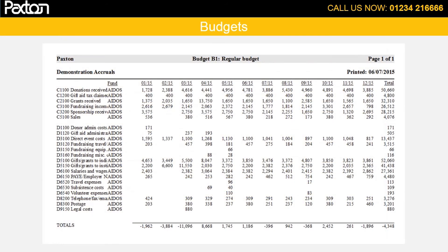A budget detail report can be produced showing the budget figures set for each fund. This is in effect the forecast for the fund and can be used to good effect when seeking grants from funding organisations. The bottom line on the report shows the monthly surplus or deficit for the forecast.